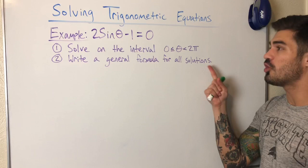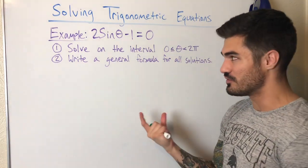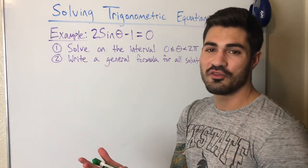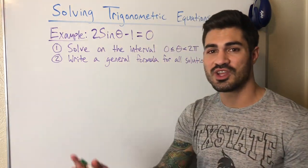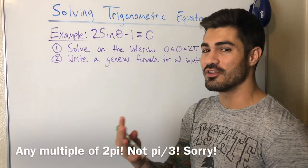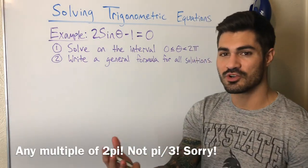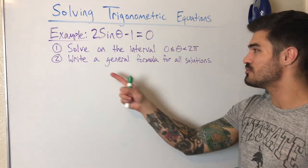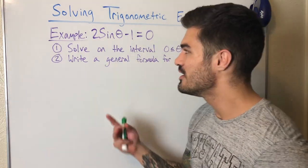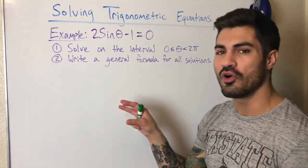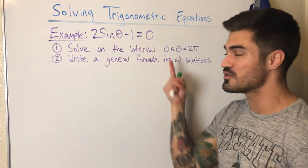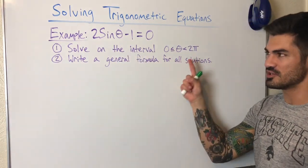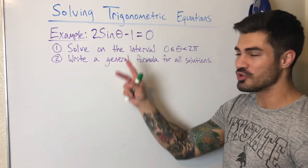When we write a general formula for all solutions, we're no longer restricted to any interval. If sine of theta equals root three over two, then pi over six makes that true, but adding or subtracting any multiple of two pi also gives a true statement — that's what a coterminal angle means. So there are infinitely many solutions. For this first example I'll show both approaches, but for the rest of the video I'll just solve on the interval from zero to two pi, since that's most commonly asked.